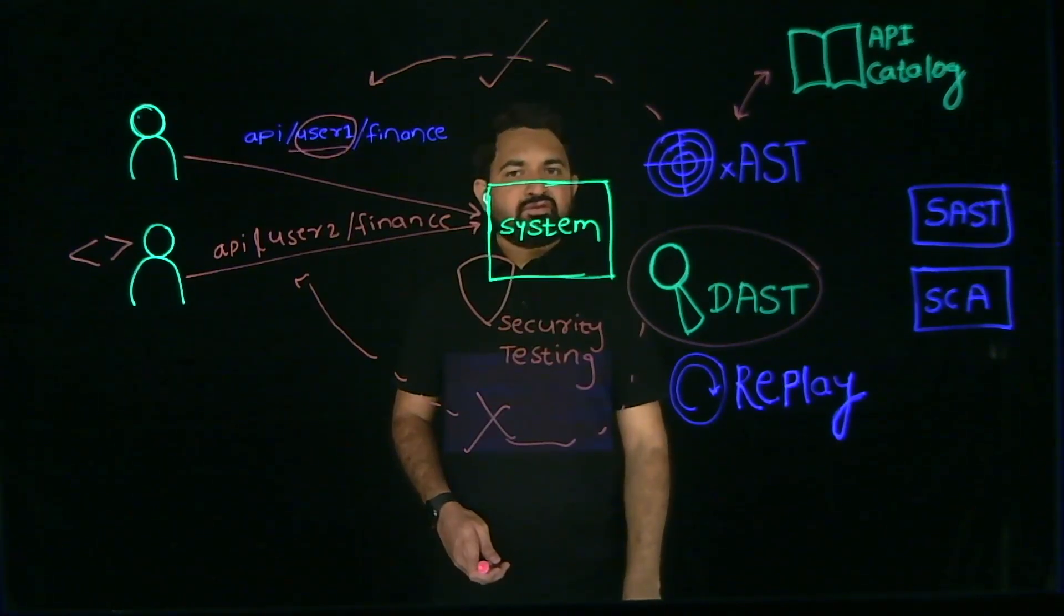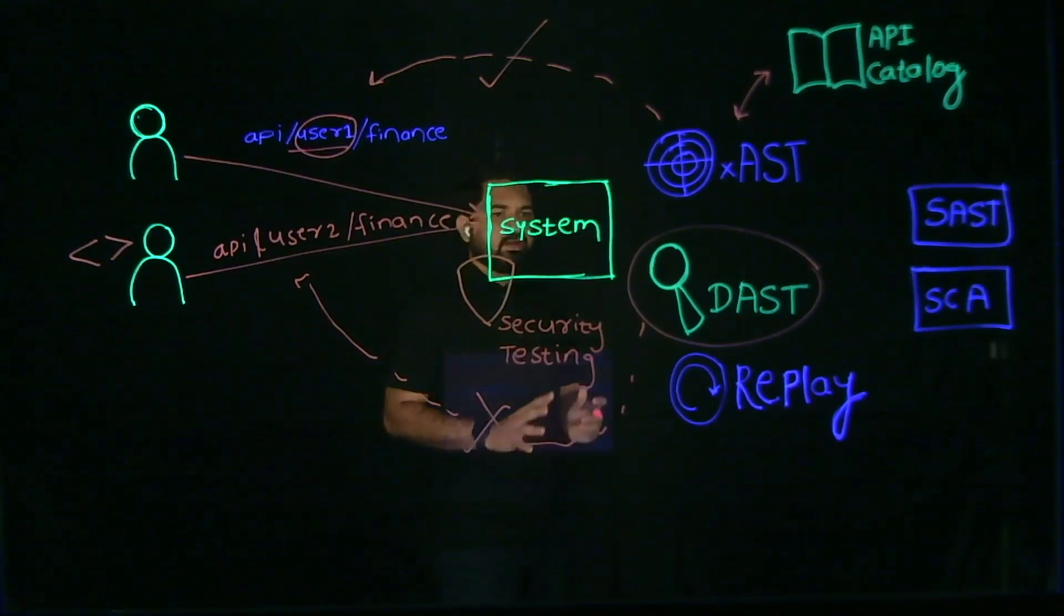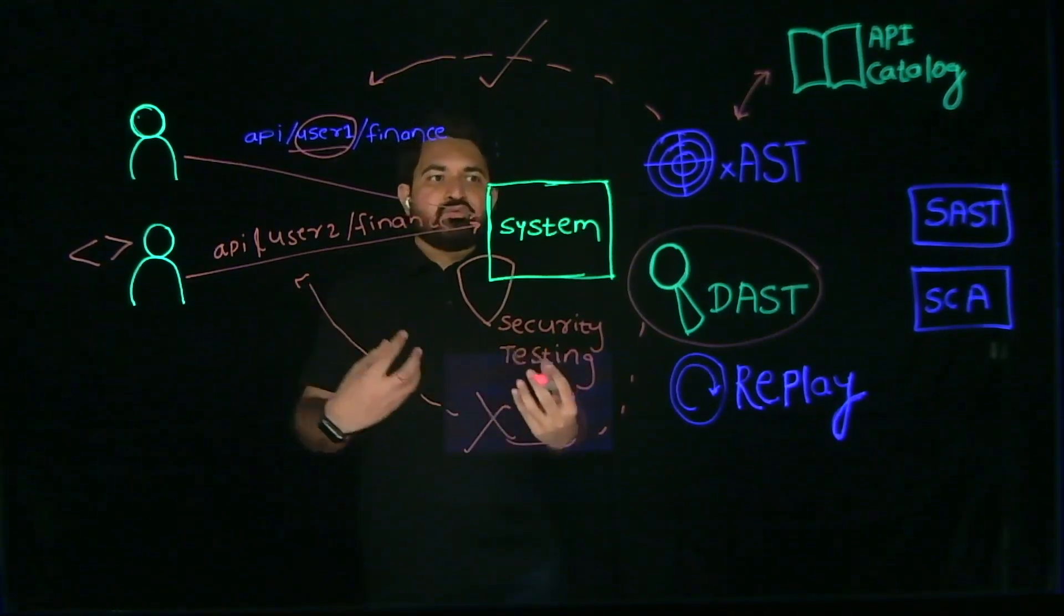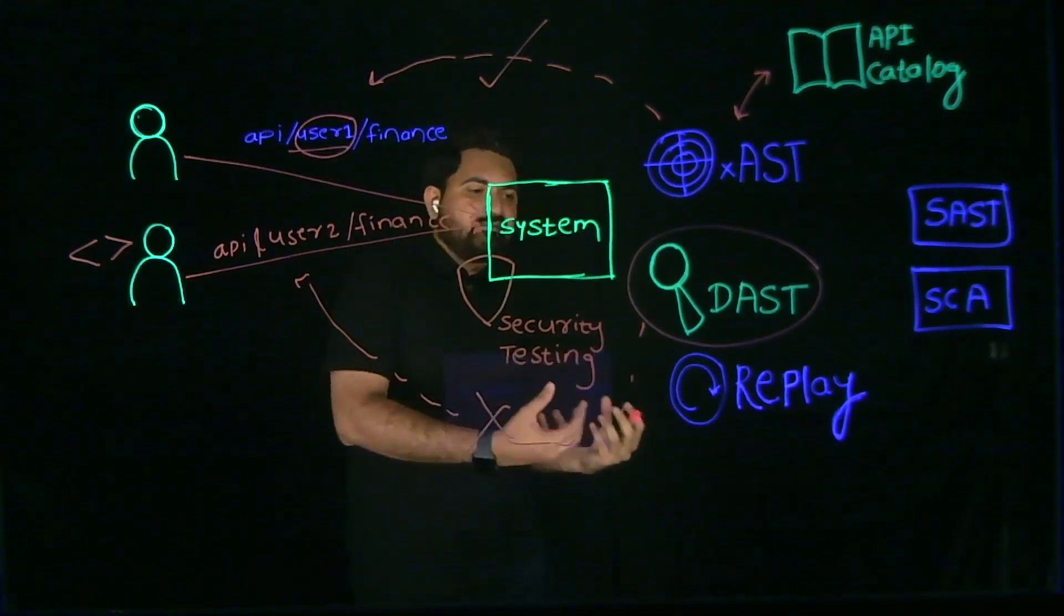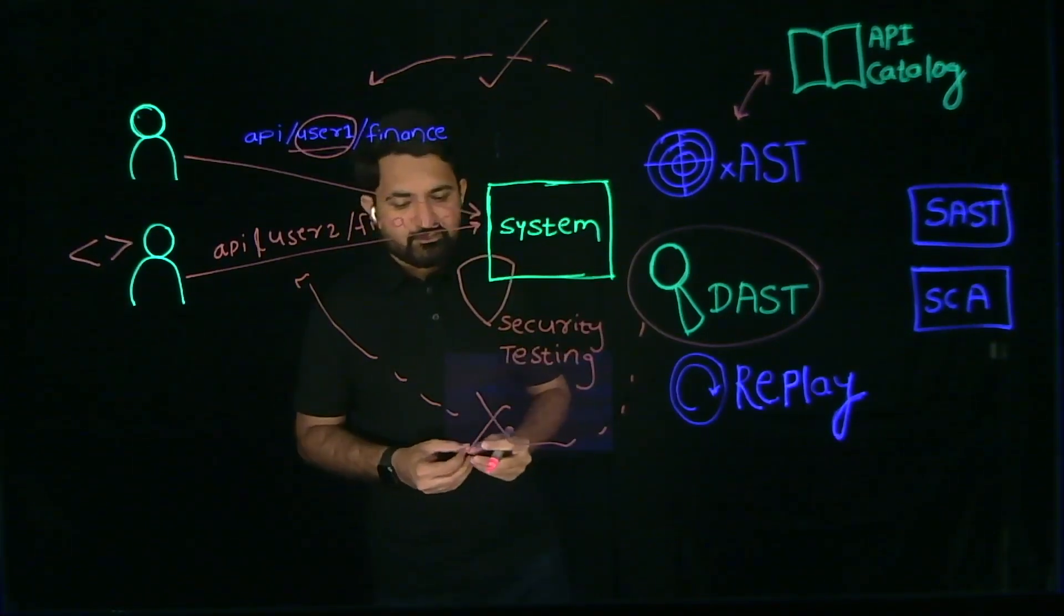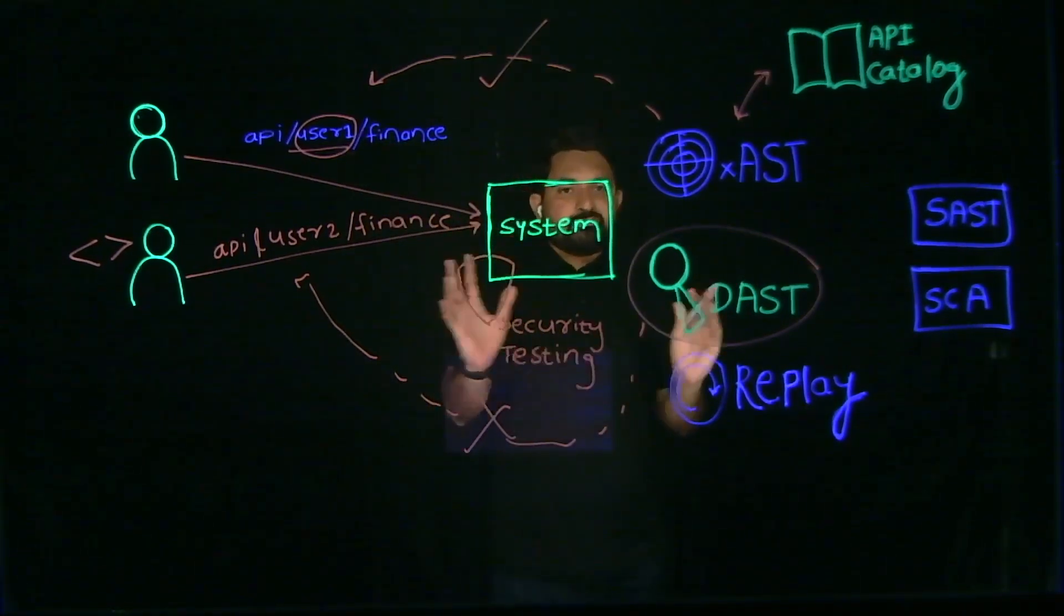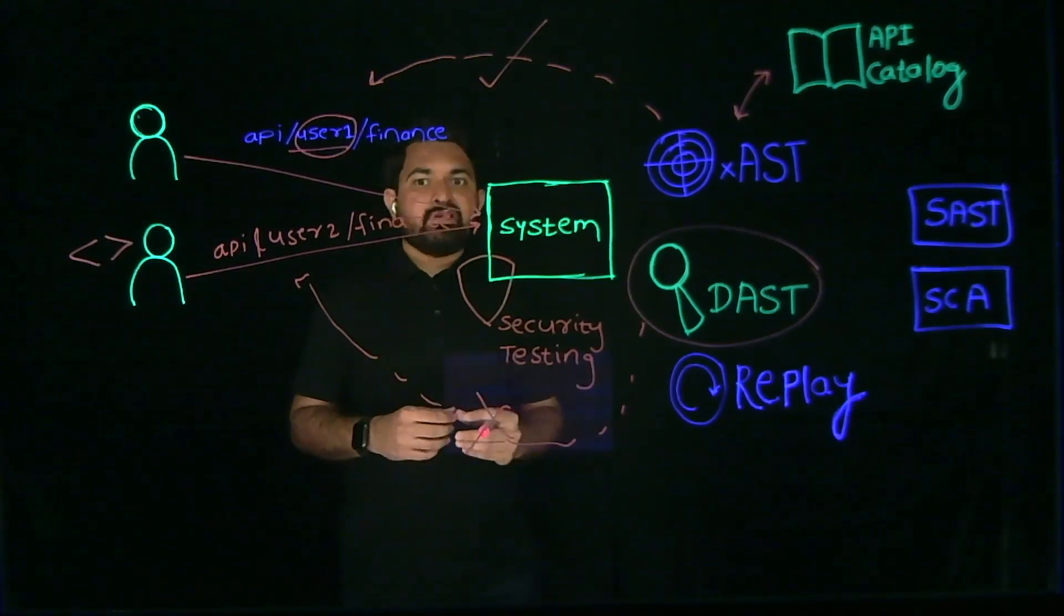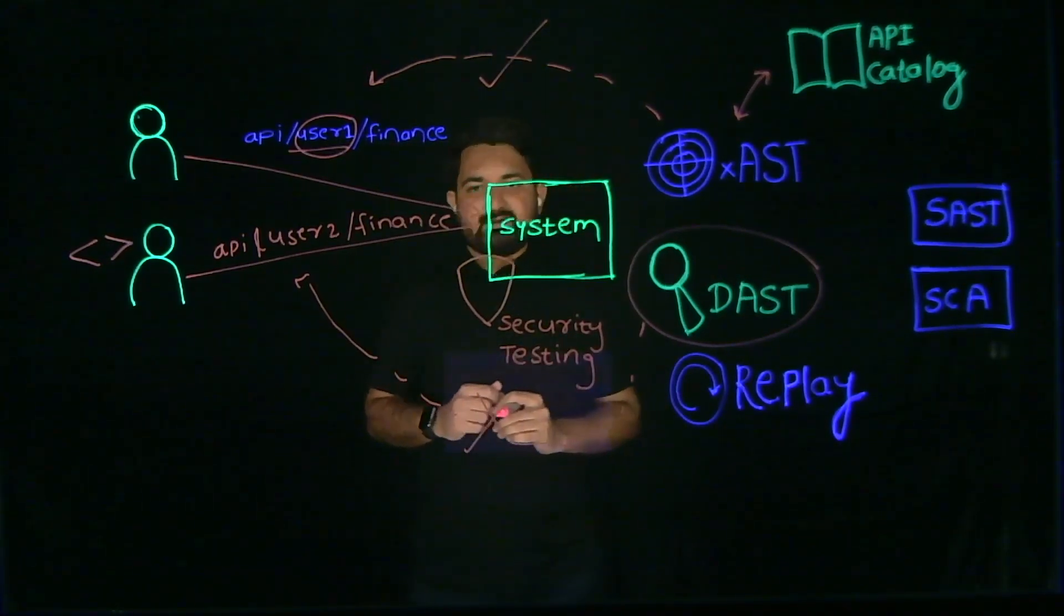Traceable XAST also supports a feature called replay. In replay, you can actually go back in time and see how you could have reacted to a particular security vulnerability. Or you can use the parsed data to increase your coverage and have more comprehensive scans, which will let you understand and analyze your security posture better.